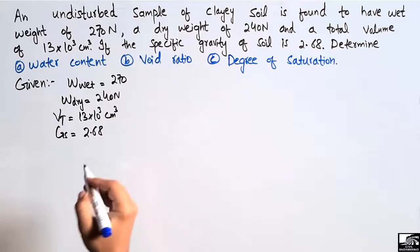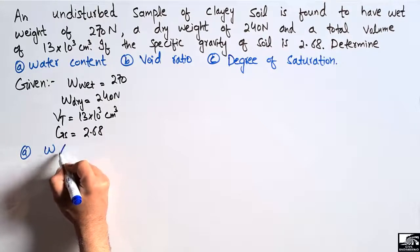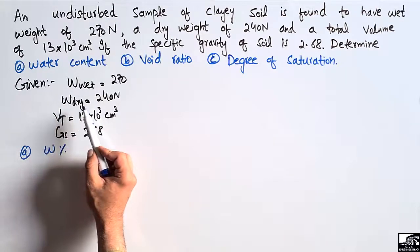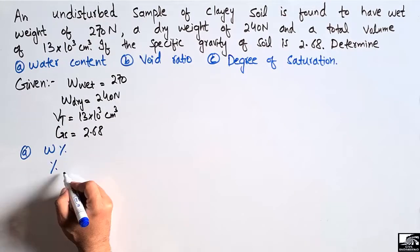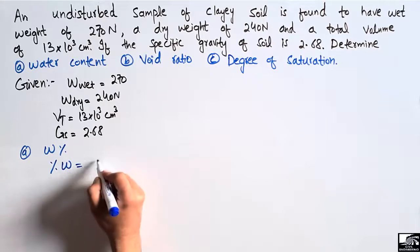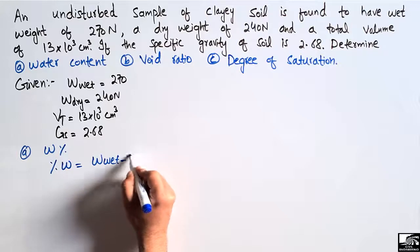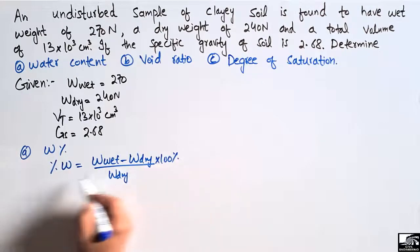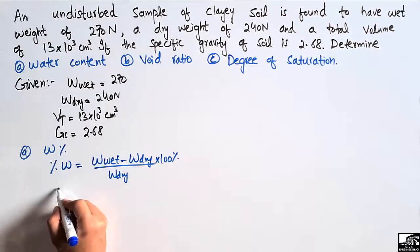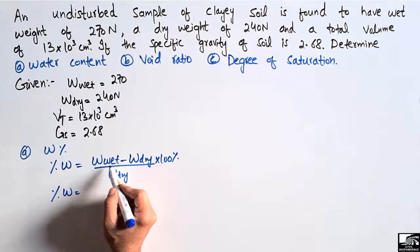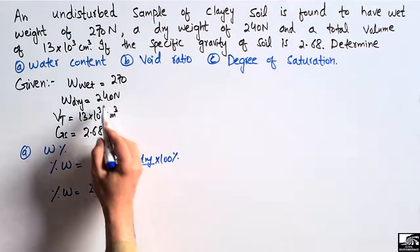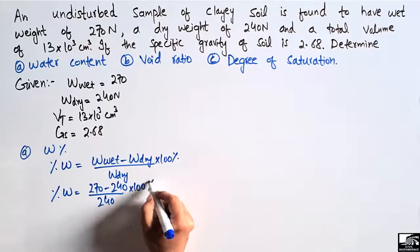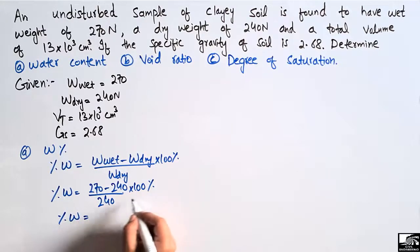Water content is represented by small w and is always expressed in percentage. Since we know the wet weight and the dry weight of the soil sample, we can find the water content using the formula: w = (wet weight − dry weight) / dry weight × 100%. So it is (270 − 240) / 240 × 100%.